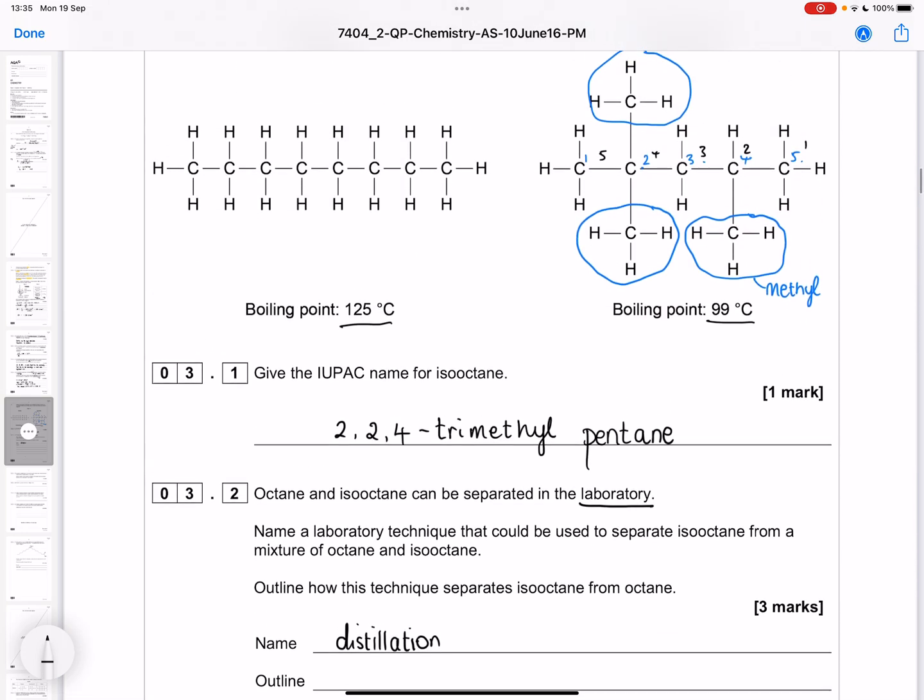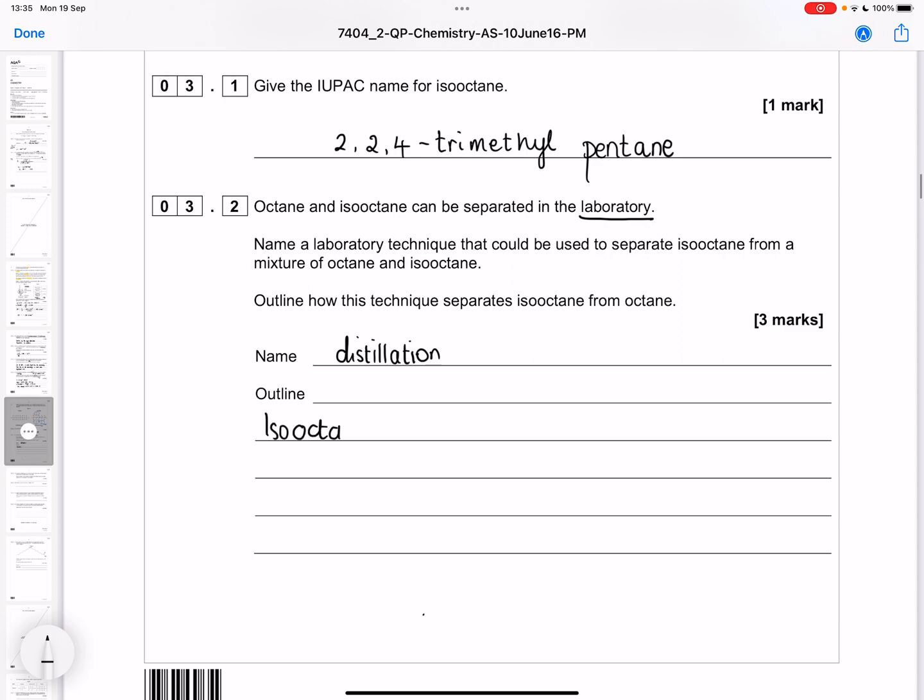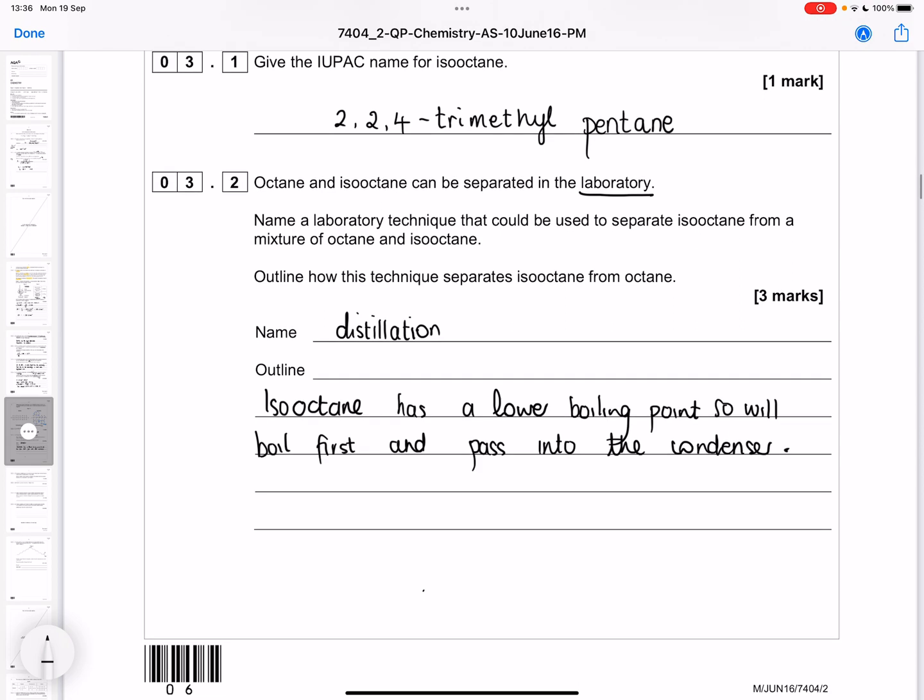We'll just get rid of that diagram and write down our answer. We look back up and find out who boils first. Isooctane is going to boil first. Isooctane has a lower boiling point, so will boil first and pass into the condenser. Then it's going to be condensed back into a liquid and collected. As a result, it's going to be separated from the octane.